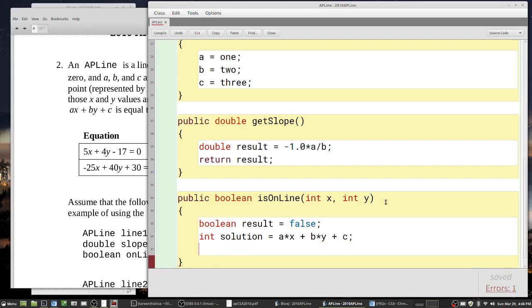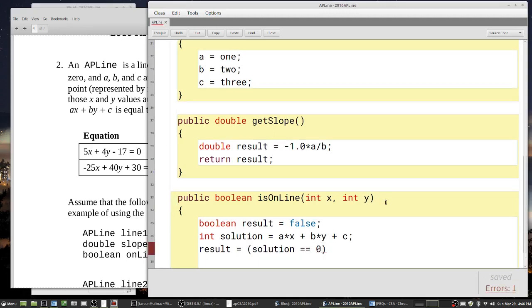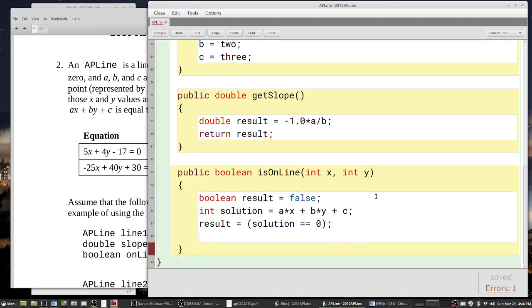I'm going to say result gets solution logically equal to zero. If the result is true, that gets put into this variable; if false, that's what gets put into this variable. I just return result. That's pretty much it. Looks like it compiles.